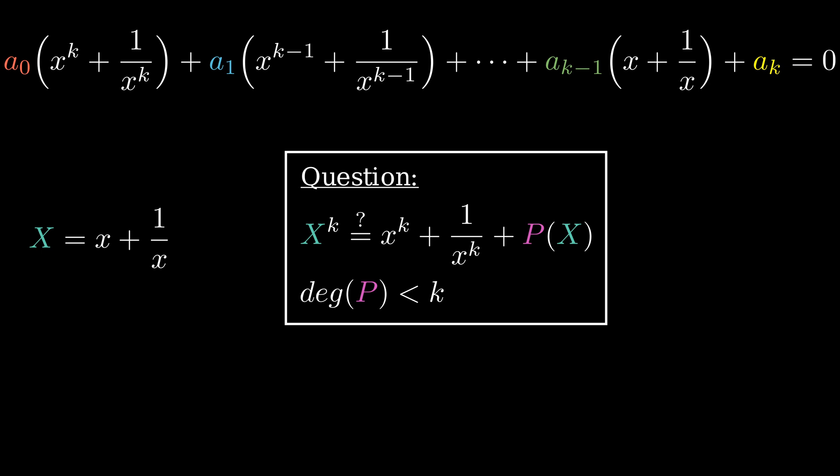This means two things. First, whatever is remaining after x to the k plus 1 over x to the k has to be expressible in terms of big X and only big X. And second, it has to be a polynomial whose degree is less than k.